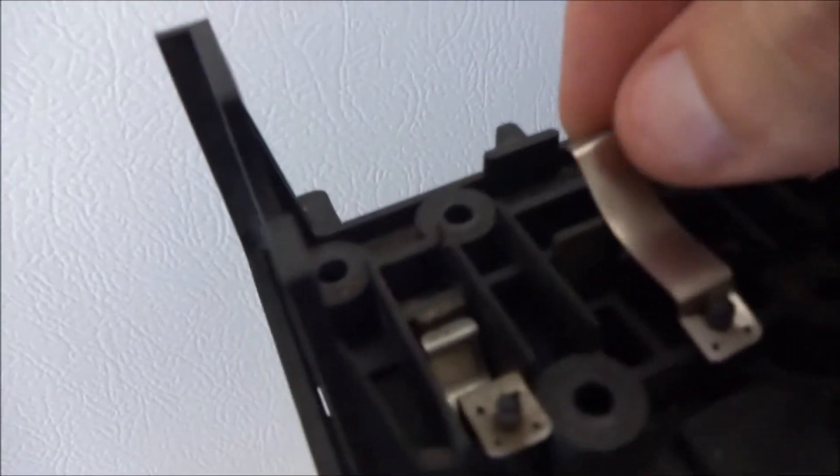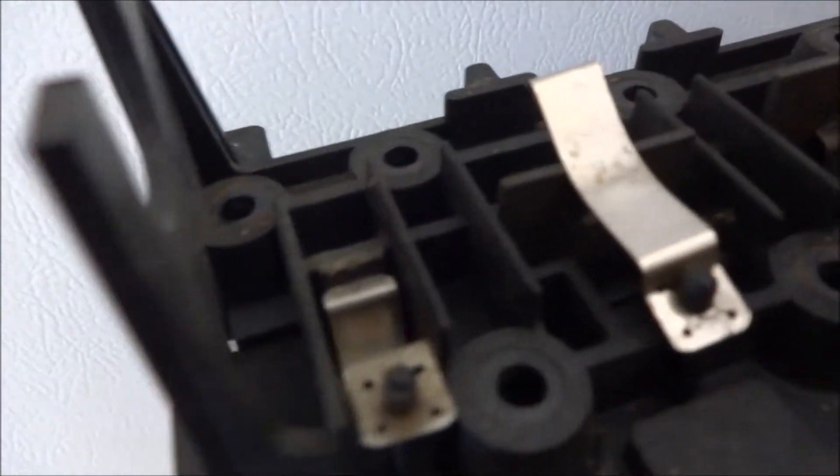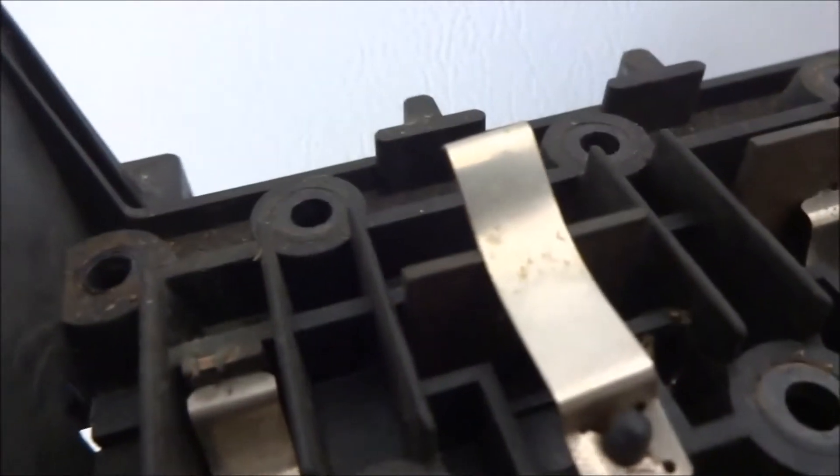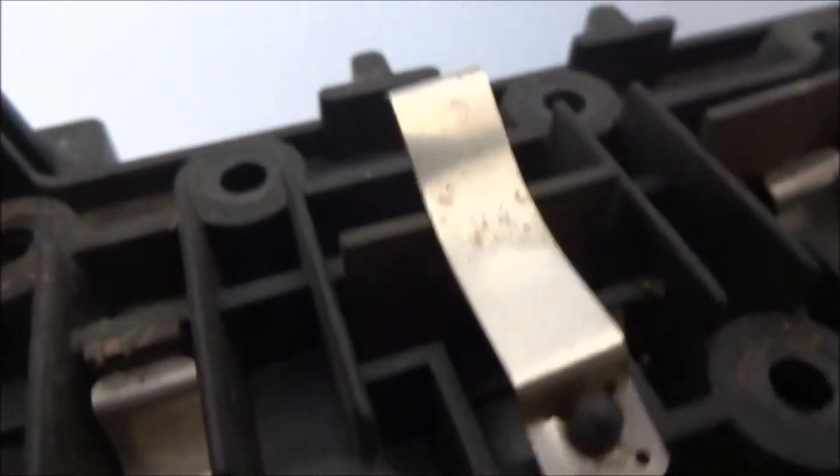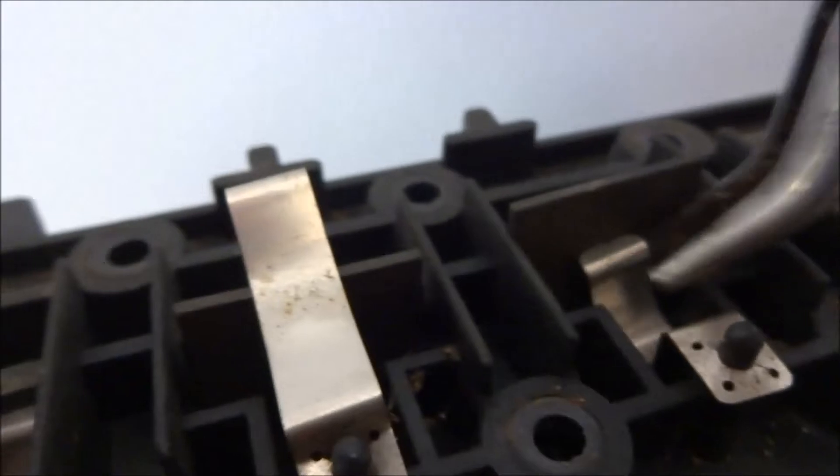Now there's these little metal tabs that have to be pulled off and released here. I'll show you how to do that. Get in there with the pliers, pull straight up. And just do that all the way across.